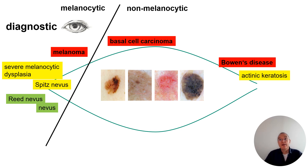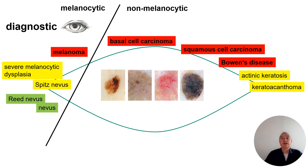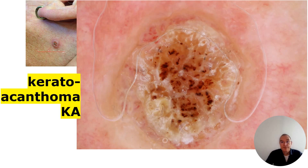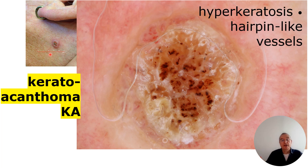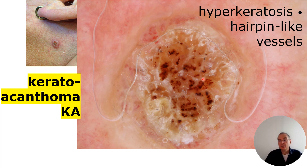We move now to the keratoacanthoma in the yellow part on the right-hand side and to the squamous cell carcinoma, which is a malignant skin lesion, skin tumor. In clinic, this is an exophytic hyperkeratotic singular tumor. When we apply the dermoscope, we see this hyperkeratosis. I like to compare this to a muffin — when we look on the top of a muffin, it looks a little bit like a muffin with hairpin-like vessels.